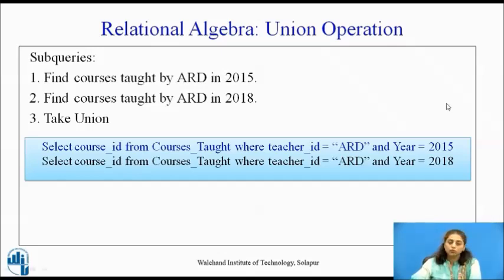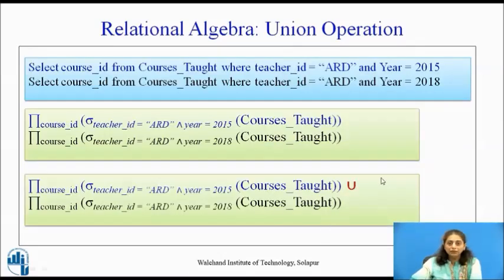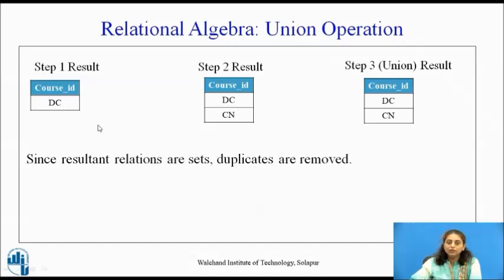Now we write the relational algebra expressions. We have already seen the select and project operations in the previous lecture. Project course_id where teacher_id = ARD and year = 2015 from courses_taught, and the same for year 2018. We use the union operator to combine the tuples from both expressions. The result of the first sub-query is DC; the second gives DC and CN. Taking the union gives DC and CN.